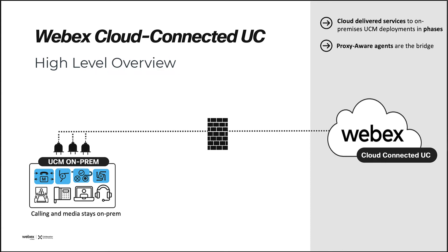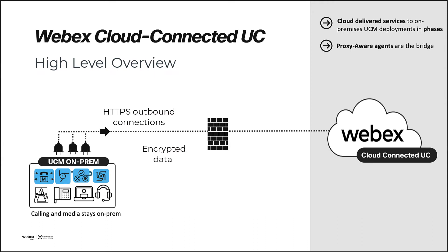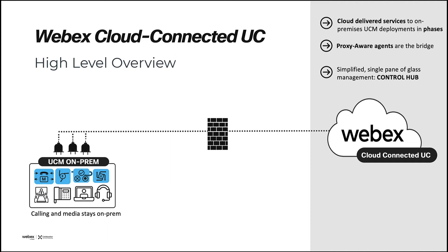A CCUC agent downloaded from Control Hub is installed in the UC components. This agent will initiate HTTPS outbound connections to the WebEx cloud to send the data, encrypted in transit and at rest. WebEx cloud will then do the processing of the data to render all information in your Control Hub organization.